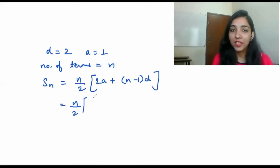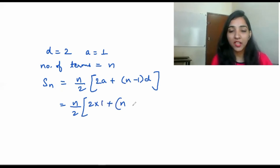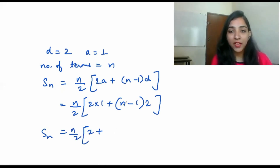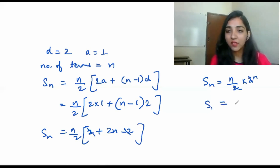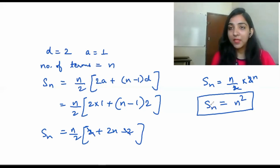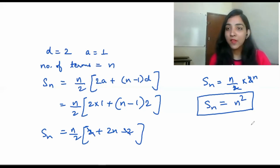So Sn = n/2 × (2×1 + (n−1)×2) = n/2 × (2 + 2n − 2) = n/2 × 2n. The 2s cancel, giving Sn = n × n = n². So the sum of the first n terms is n squared.